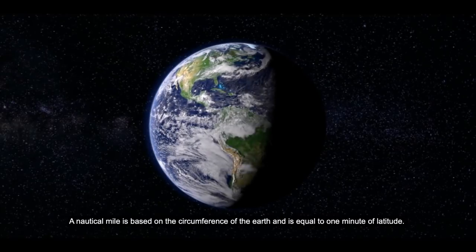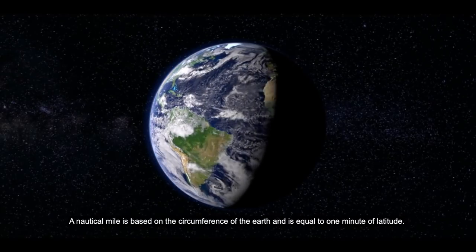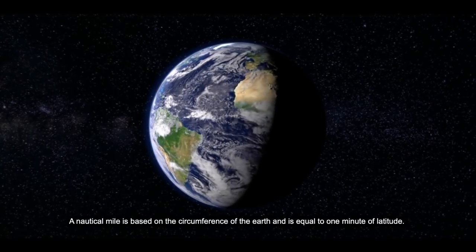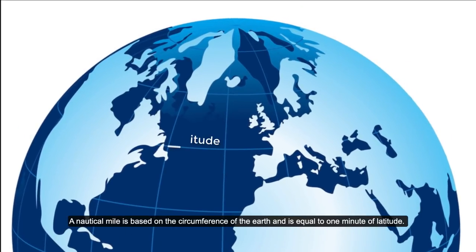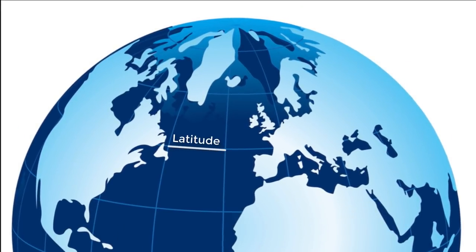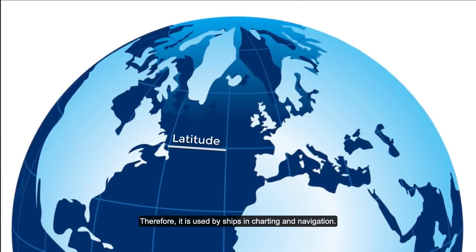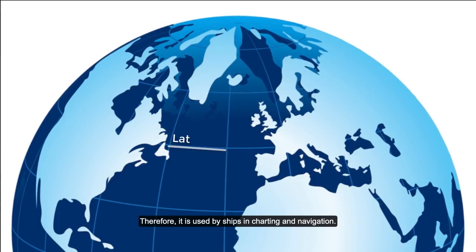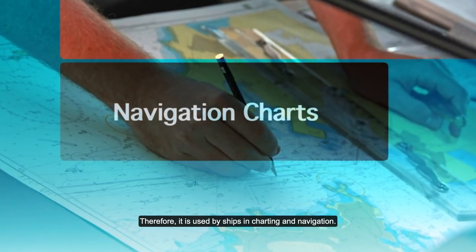A nautical mile is based on the circumference of the earth and is equal to 1 minute of latitude. Therefore, it is used in ships for charting and navigation.